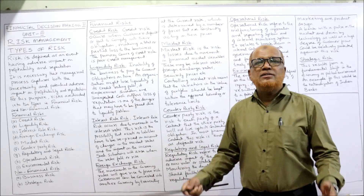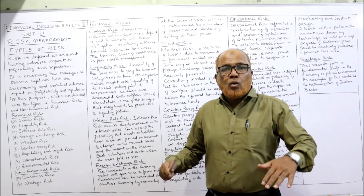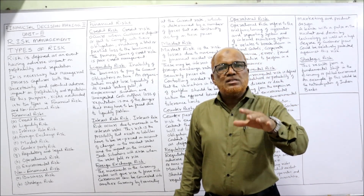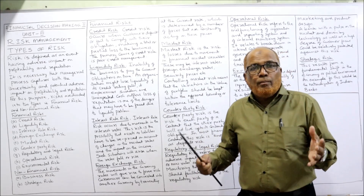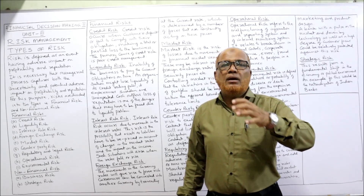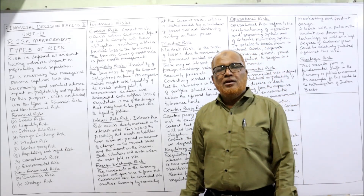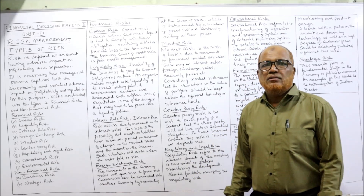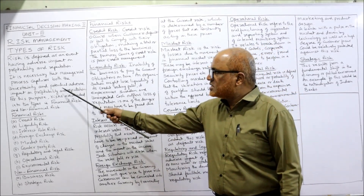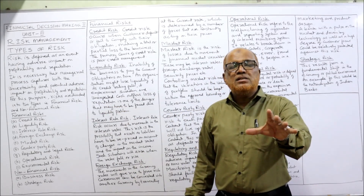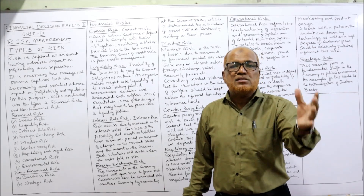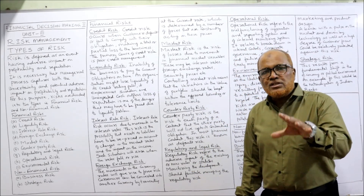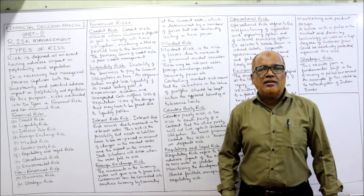Every business must identify, recognize, quantify, assess, and then control the risk. Business organizations have realized that we cannot avoid risk — we have to manage it. If we manage it properly, only then can we achieve the objectives of the business. We should not ignore risk; it's an integral part. Management must recognize and find out what the uncertainty and risk involved are, and what the impact of the risk is on our profitability and reputation. For this purpose, we classify risk into two categories: financial risk and non-financial risk.